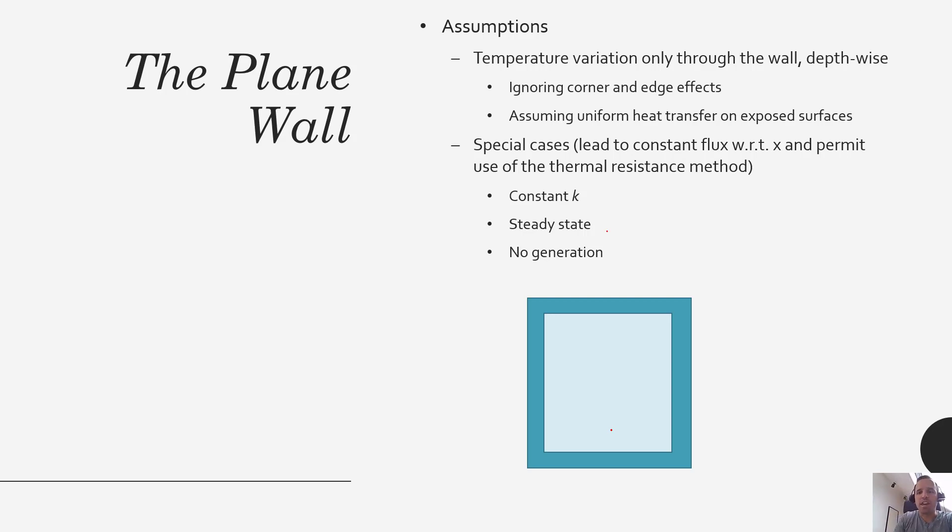So these special cases lead to having constant flux with respect to x, and they're also going to allow us to use something called the thermal resistance method, which we're going to develop after we've talked a little bit more about plane walls.